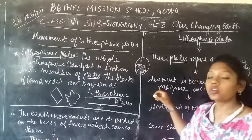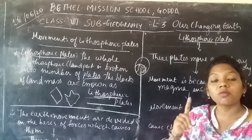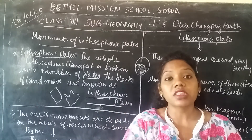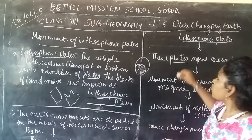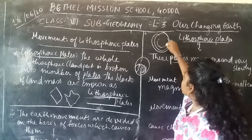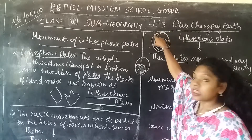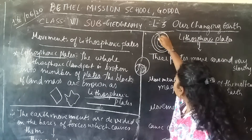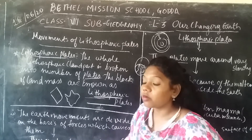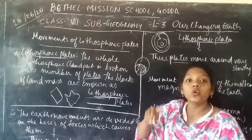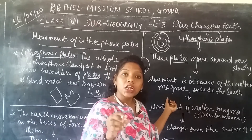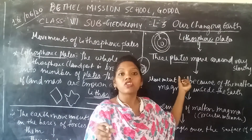Molten magma is the magma that comes out of a volcano during eruptions. In the last chapter, you learned about the layers of the earth — the crust, the mantle, and the core. The mantle contains molten magma in liquid or fluid form, and this molten magma causes the lithospheric plates to move around from one place to another.